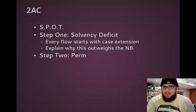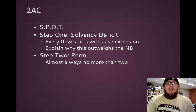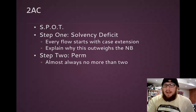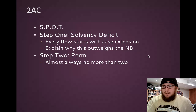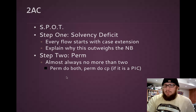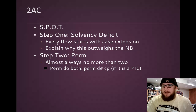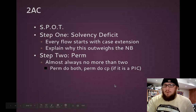Step two, or the P in SPOT, is the permutation. The permutation is a test of competition, where you see if there's a way that you can combine all of the affirmative with all or part of the action of the counterplan to see if you can create a policy that solves the best of both worlds. So a permutation is something as simple as perm do both, perm do the counterplan, perm do the plan then the counterplan, perm do X and Y — a combination of the world of the affirmative and the world of the counterplan.